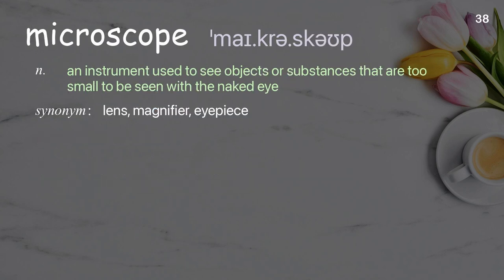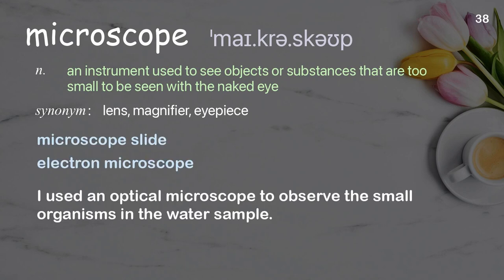Microscope. An instrument used to see objects or substances that are too small to be seen with the naked eye. Examples: microscope slide, electron microscope. I used an optical microscope to observe the small organisms in the water sample.